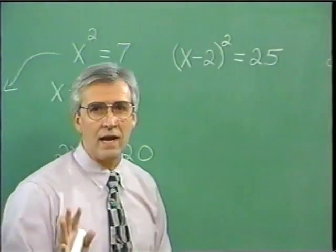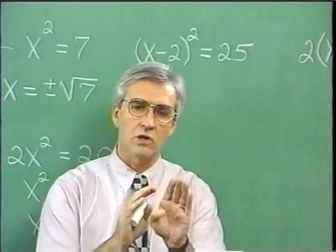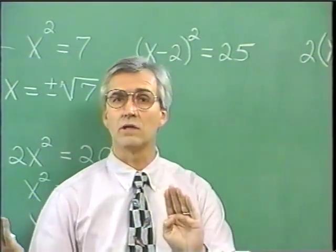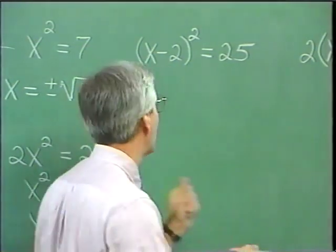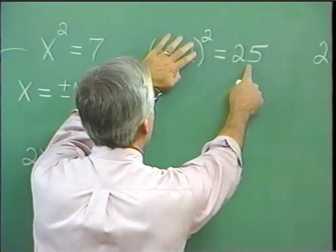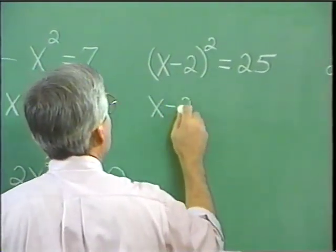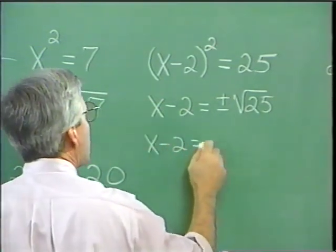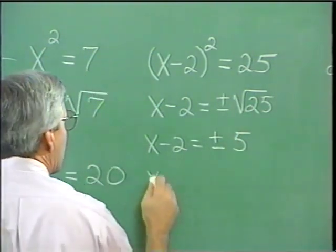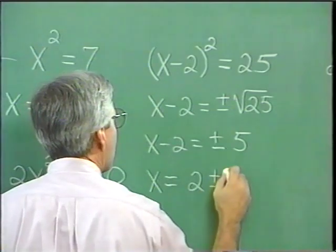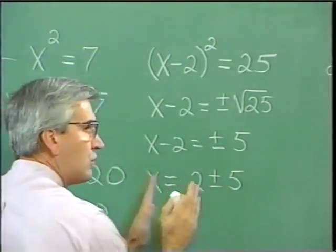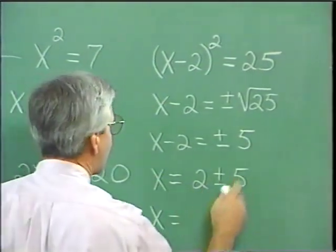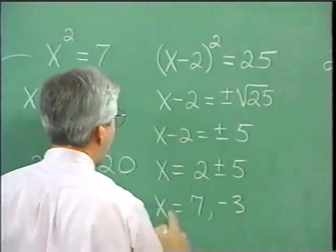We can also use extracting square roots when any unknown quantity is squared, not just x. Any unknown quantity which is squared, set equal to a real number, is a candidate for extracting square roots. Here the variable quantity is x minus 2, squared, set equal to 25. So x minus 2 is equal to plus or minus 5. Adding 2 on both sides, x is 2 plus or minus 5. This represents two solutions: 2 plus 5 is 7, and 2 minus 5 is negative 3. So x is 7 or negative 3.